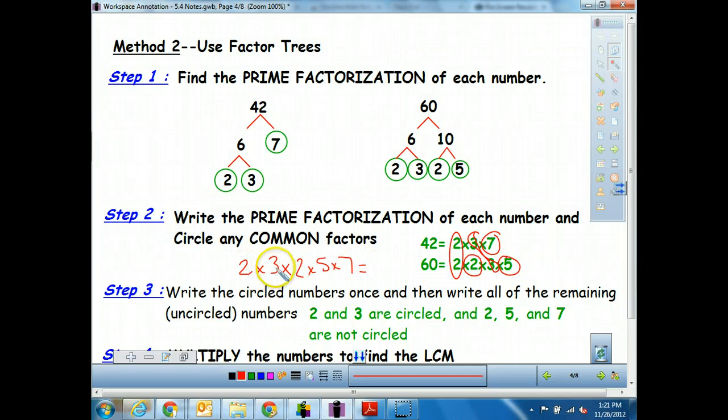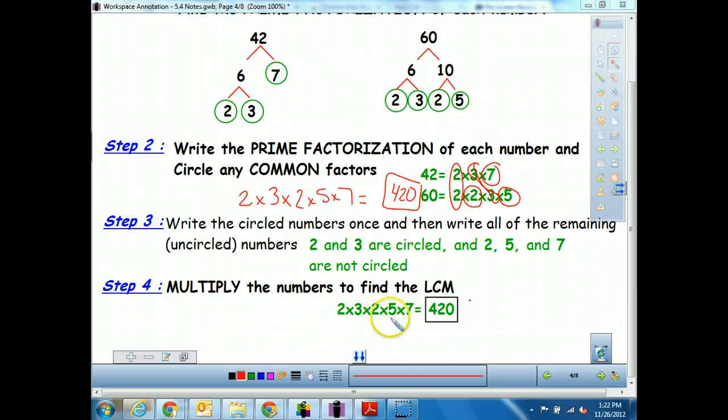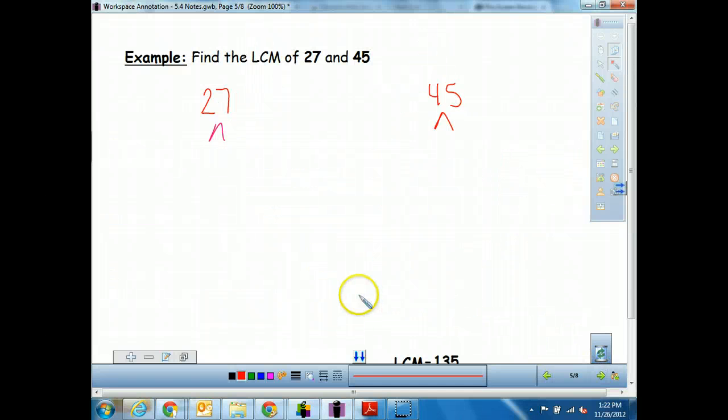So 2 times 3 is 6, times 2 is 12, times 5 is 60, times 7 is 420, is my least common multiple, which it would take a little while to get that if I was doing the first method. So you can see the least common multiple between these numbers is 420. So we pick those first two numbers or the ones that we had circled common in both of them and then we pick up all those little extra ones. So let's go ahead and try it.